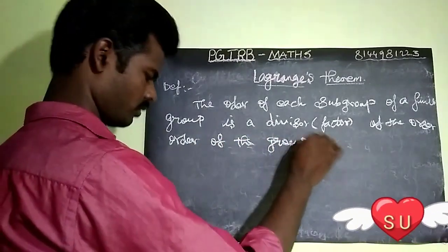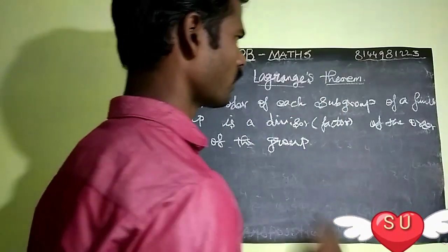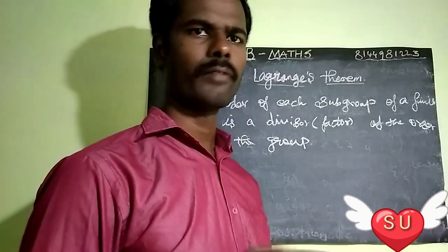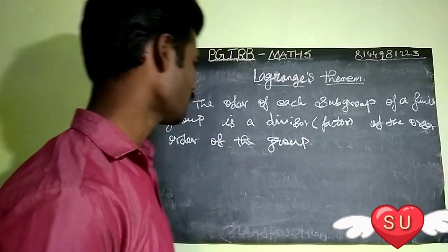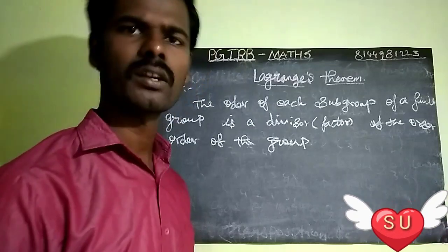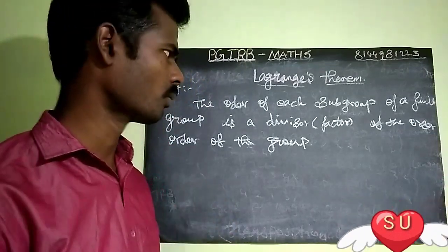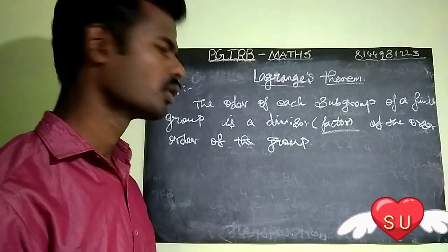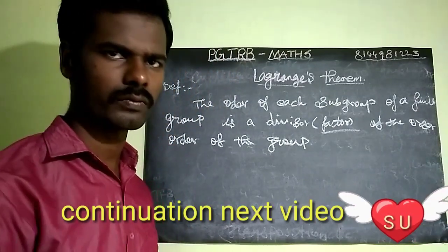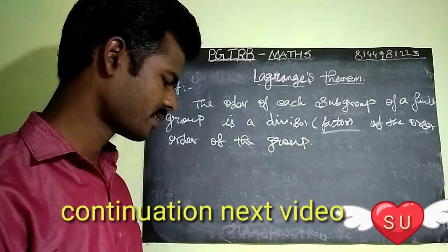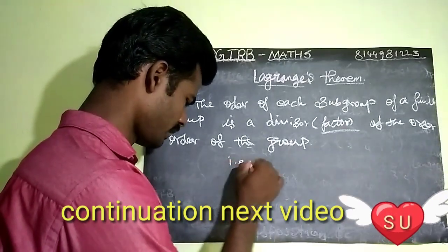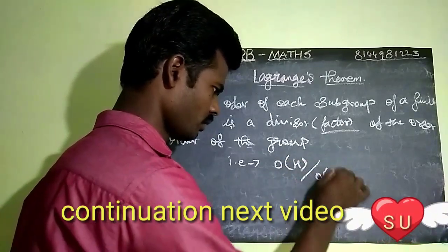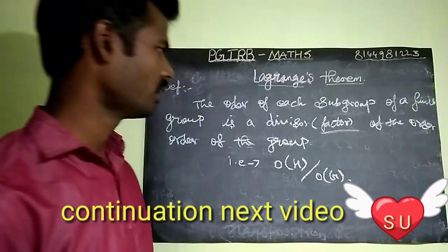So the order of each subgroup of a finite group — each subgroup — that is, a factor of the order of the group. For example, the order of H divides the order of G. So this is Lagrange's theorem.